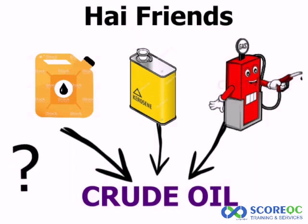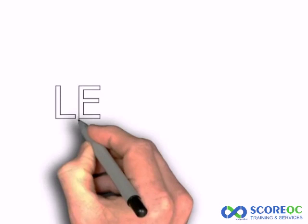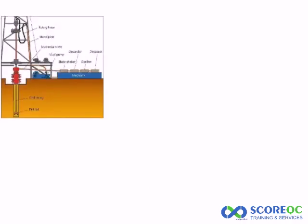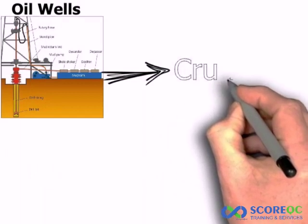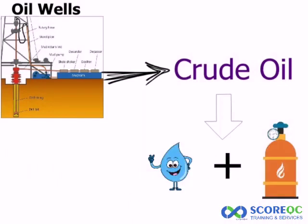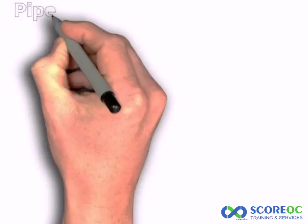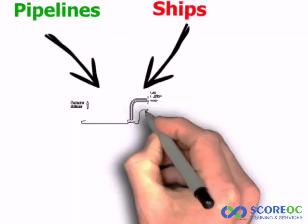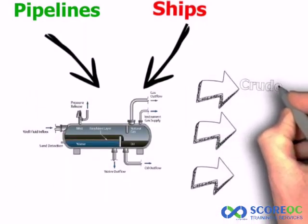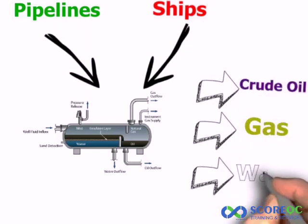We use crude oil to separate them using a separation process. We use a mixture of water and natural gas, and we use pipelines and ships to transport them in a separate section. This is the case of crude oil, gas, and water — we use a separate process.